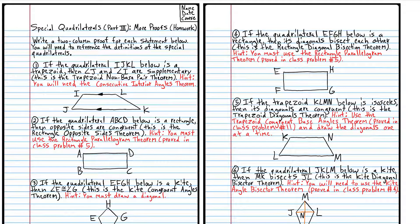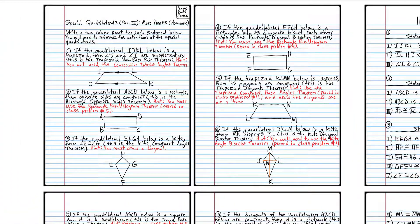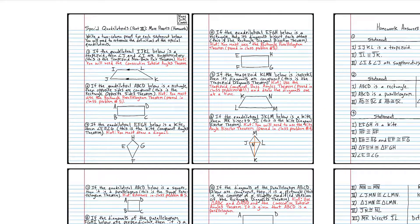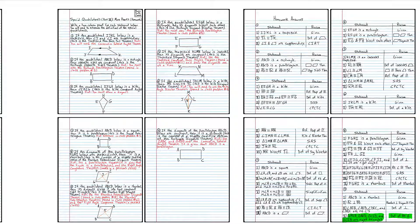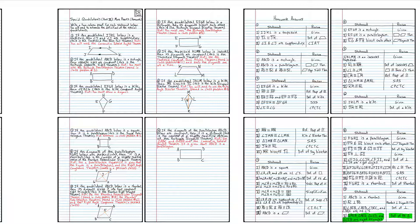I give you hints because some of these problems require various theorems — for example, number one says use the consecutive interior angles theorem, number two says use the rectangle parallelogram theorem, and so on. I'm giving you hints because it's not fair to give you proofs you've never done before. These are going to be challenging — that's why there are only ten of them. Proofs are difficult, so if you get stuck, don't feel bad. If you feel these are difficult, that's completely normal for students. That's why I'm only giving you ten problems. Get that homework done completely, correctly, and neatly, make sure it's in order in your binder, and I'll look forward to seeing you in the next class. Thank you very much.